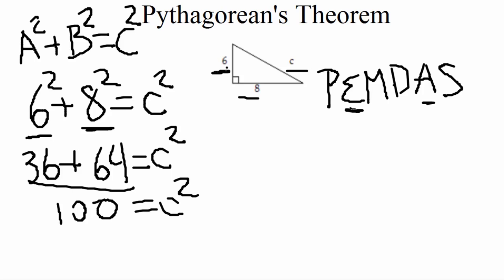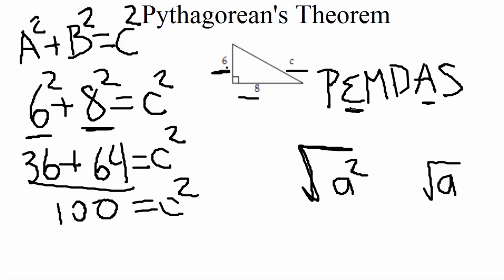We need to remember we are solving an equation, so we need c by itself. We're almost there — we just have that c squared. To get rid of a square, we take the square root, because a square and a square root are opposites of each other and cancel out. And remember the golden rule of solving an equation: what we do to one side we must always do to the other side.